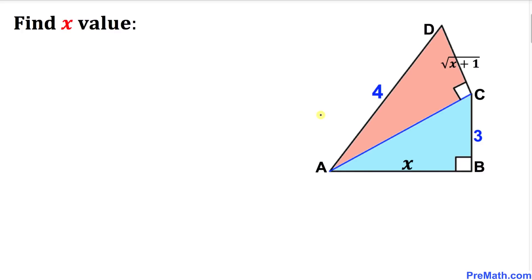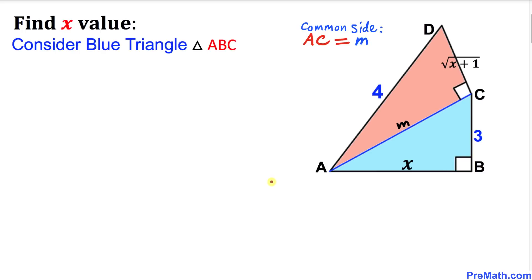Let's get started with the solution. The first thing we are going to do is notice that side AC is common between these two triangles, so I'll call this side AC as lowercase m.